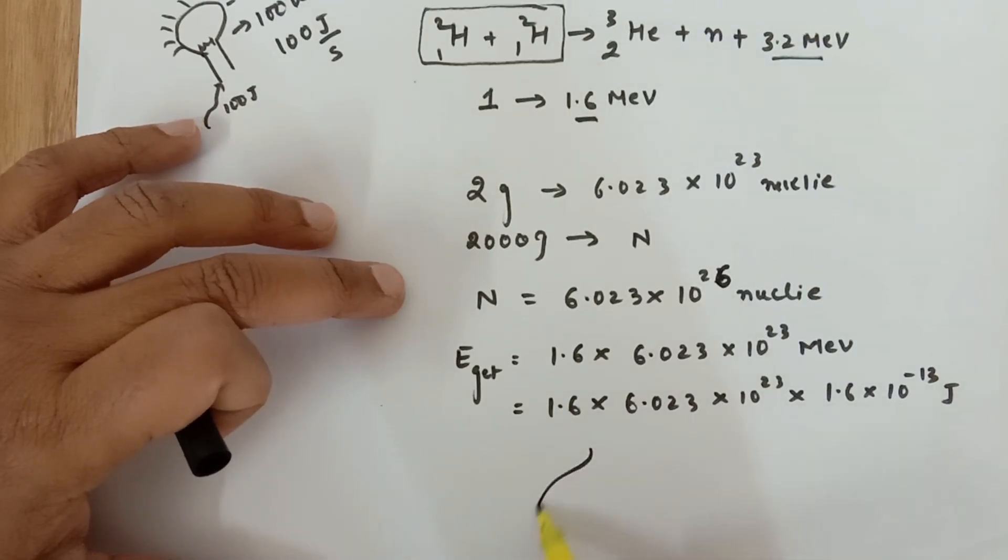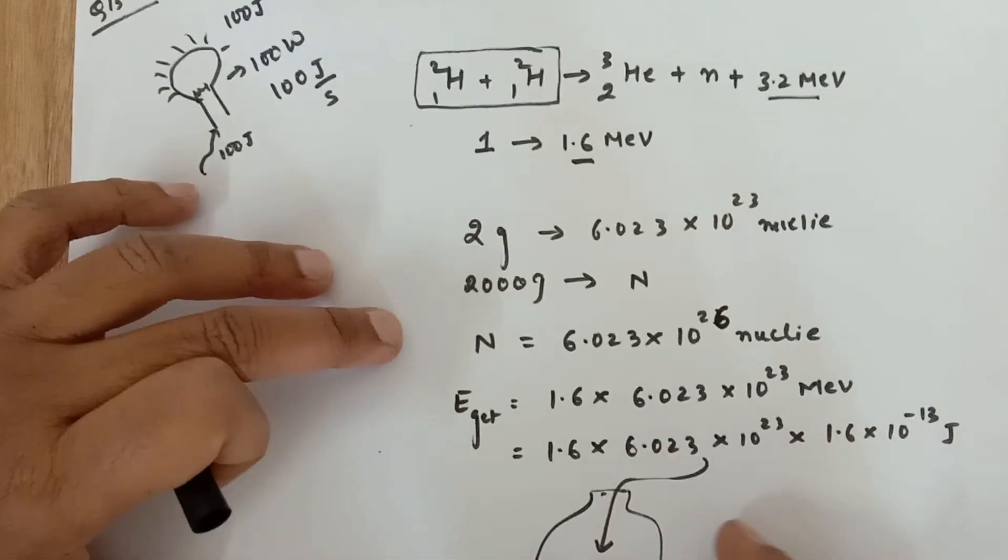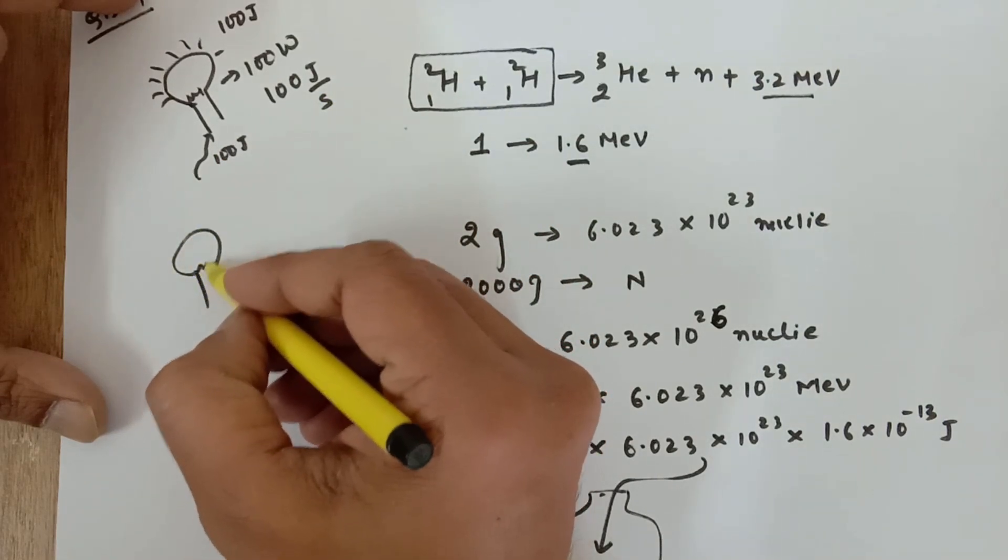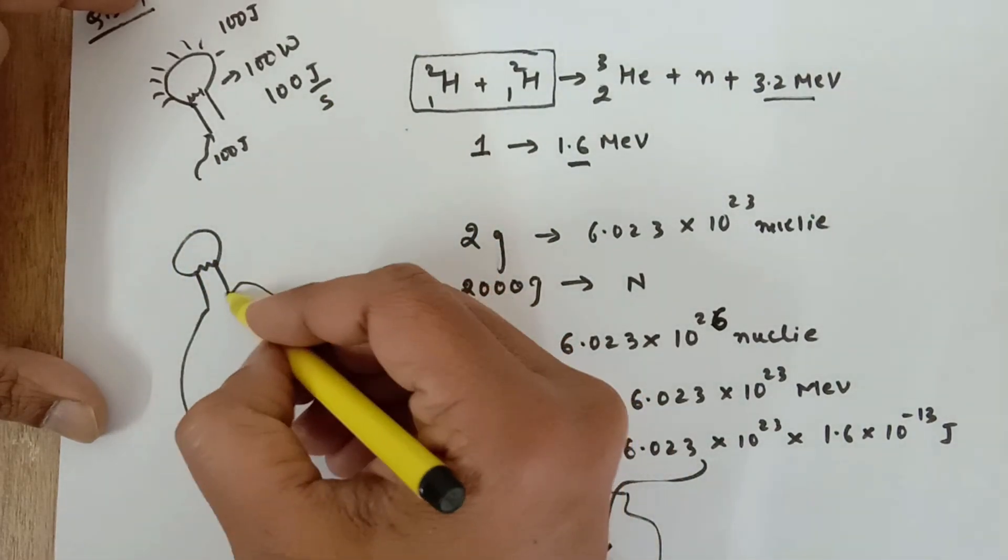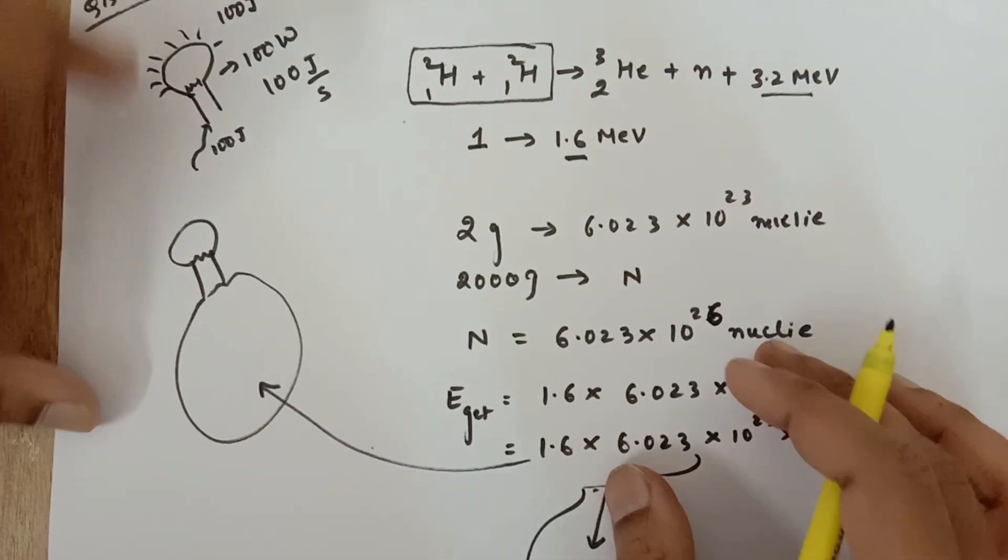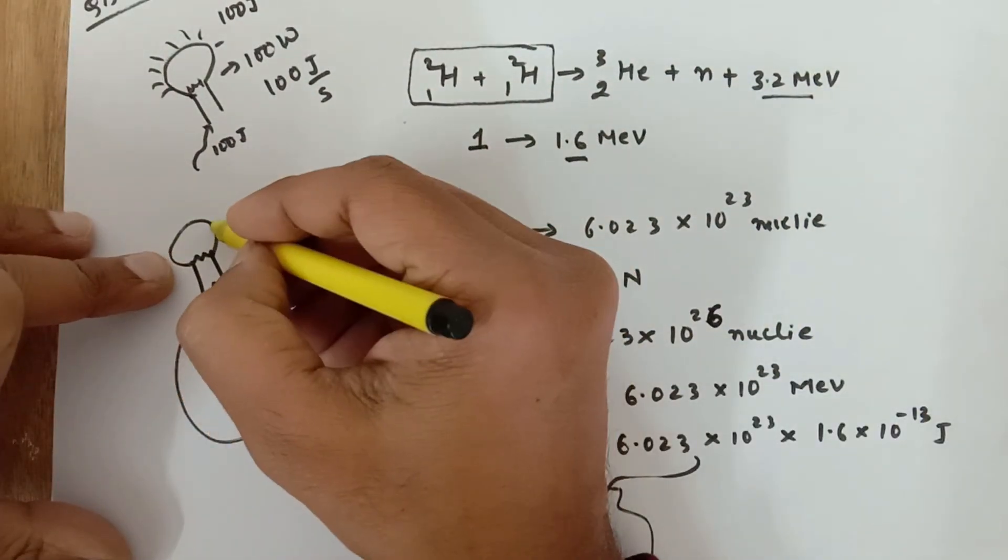Now suppose this energy, if I put it in a bag. I have this bag and this amount of energy is there in the bag. Now this bag is attached with the bulb, the same 100-watt bulb.